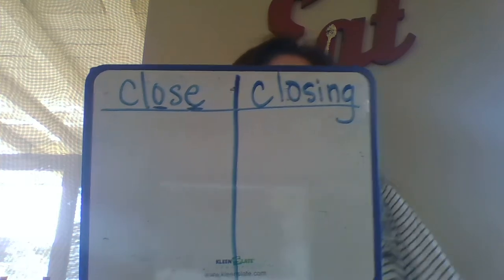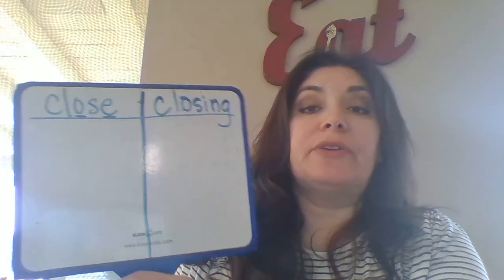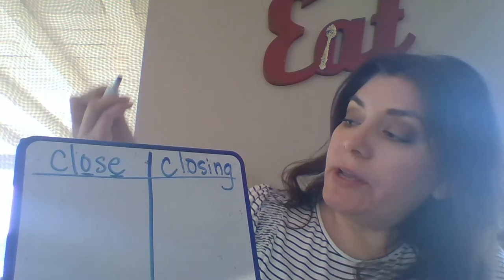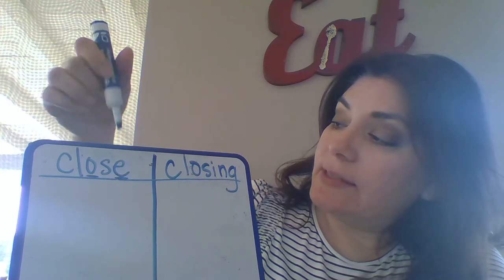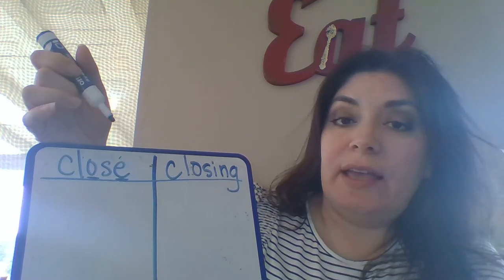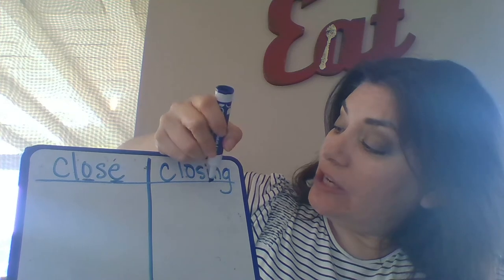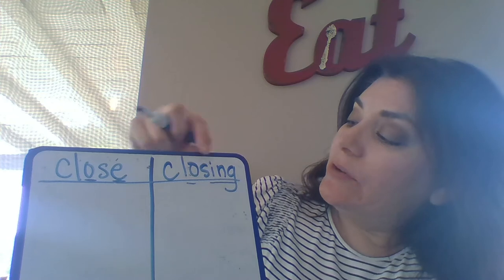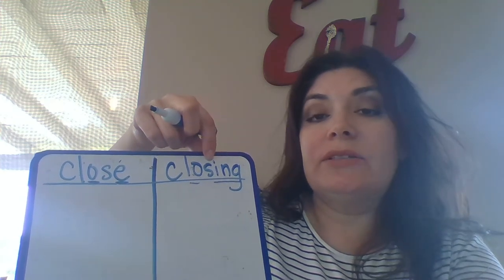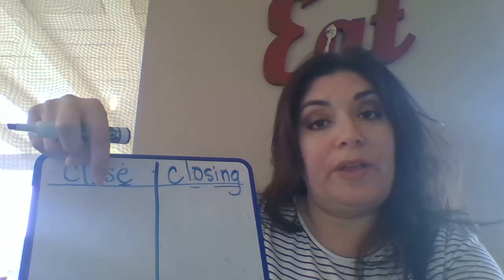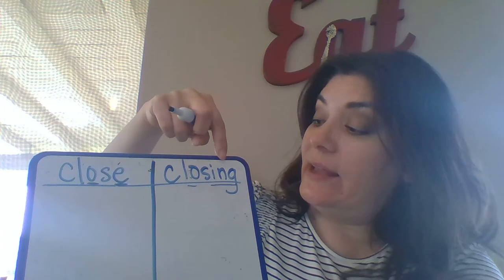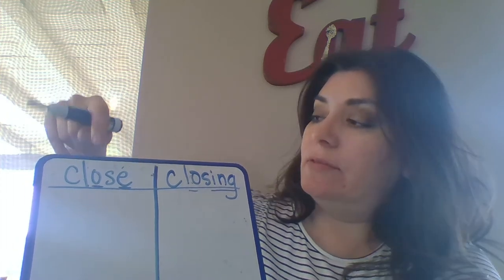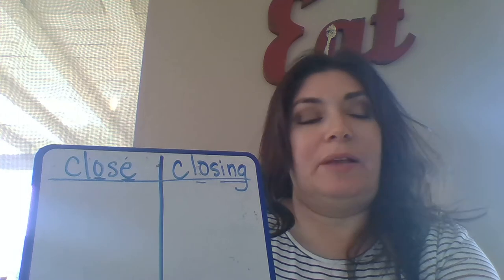You should have the two words 'close' and 'closing' on your board. Remember, if I go too fast, push pause so you can catch up. What I want you to notice is that on the word 'close' I have the silent E on the end, but when I add the ending -ING and underline it, I notice the silent E is no longer there. So the rule is: you drop the E and then add the ending.